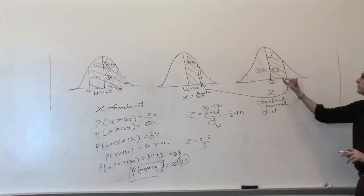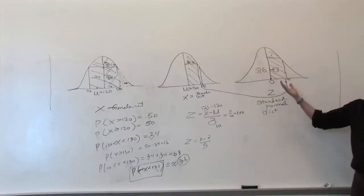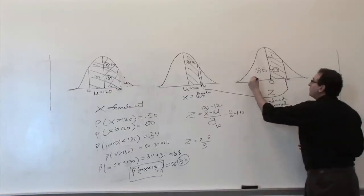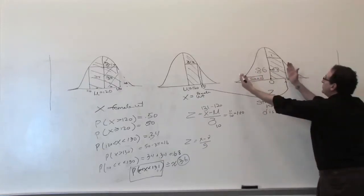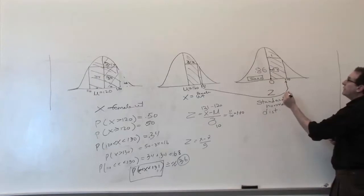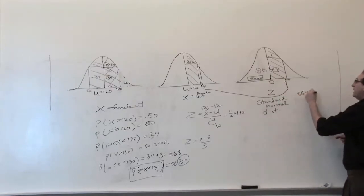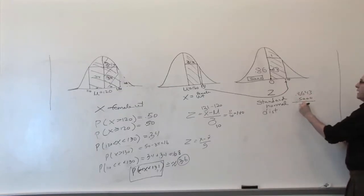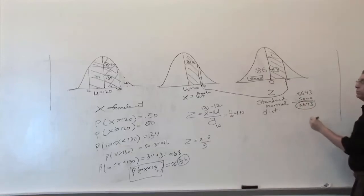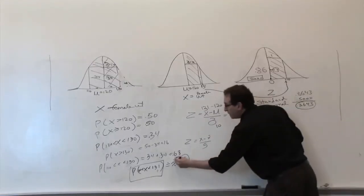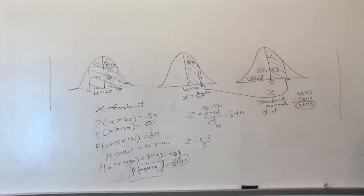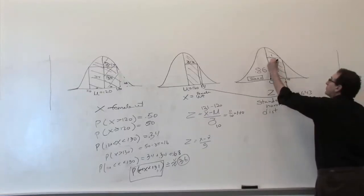But that's not the answer we're looking for — we want just this piece over here. The area below 0 is 50%, and if the total below 1.10 is 86%, you subtract: 86.43 minus 50.00 equals 36.43. Rounded to two places, that's 36%. The answer we guessed at 36% turns out to be almost perfect — the exact answer is 36.3%.